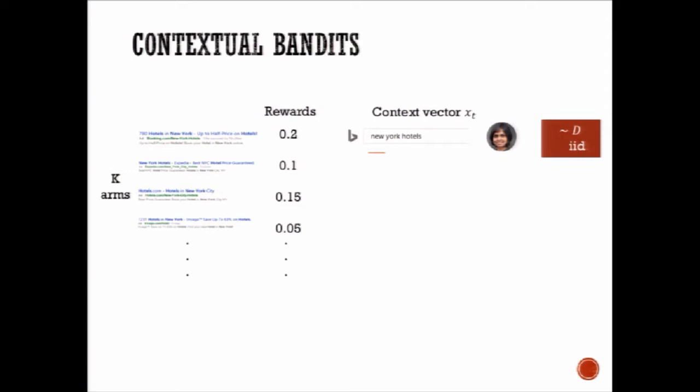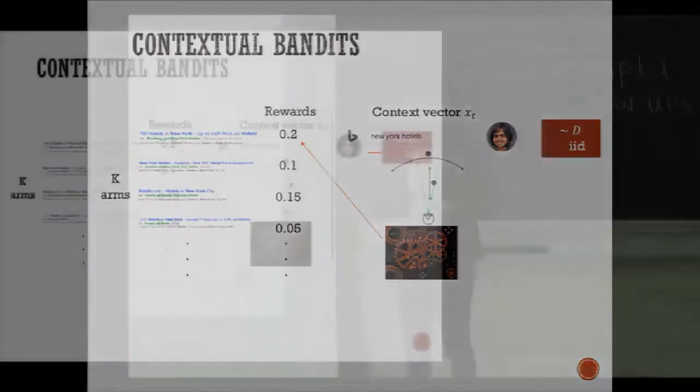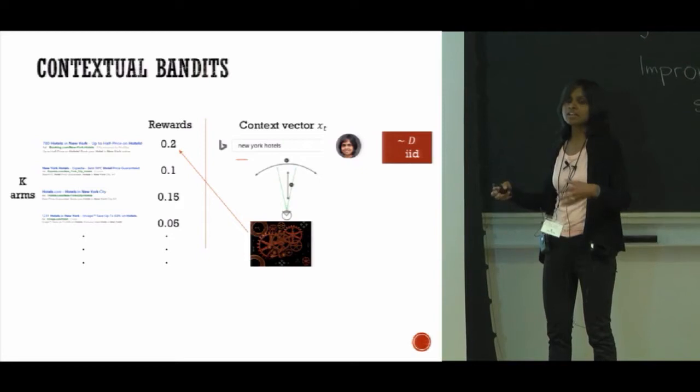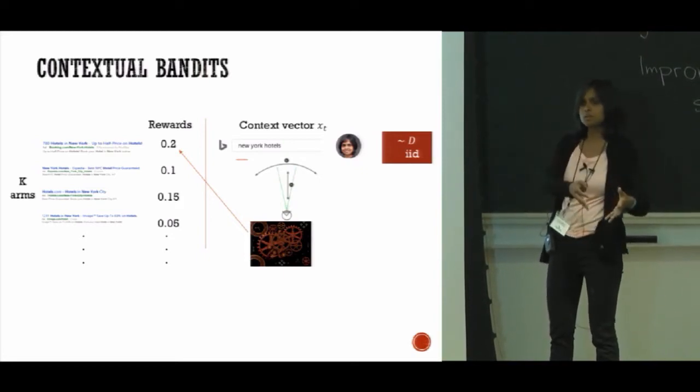The way the problem proceeds is that at every step the algorithm sees a context vector—the user and the query—and it has to select one of these arms. After this arm is selected, it can see the reward for that arm. Now the goal of the algorithm is to maximize the total reward that it gets by pulling these arms. So effectively the algorithm is trying to learn: if I see a certain context, what arm should I pull?